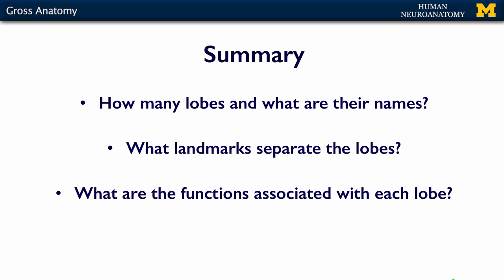In summary, what's important to remember from this lecture: how many lobes there are and what their names are; what the landmarks — gyri, sulci, or other features — separate these lobes so you can tell where one starts and the other stops; and what functions are associated with each lobe. If you understand all of those, you'll do very well on the quiz.